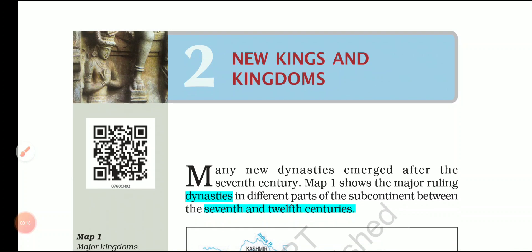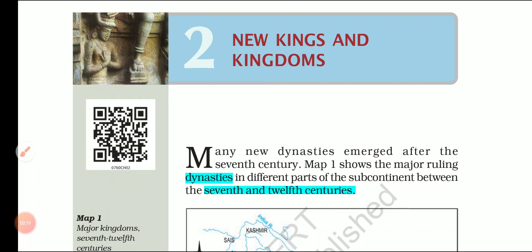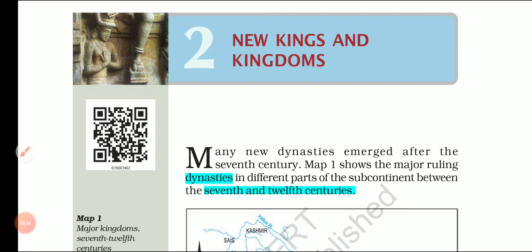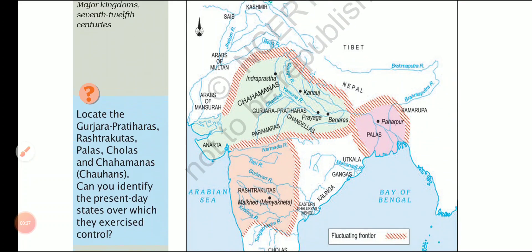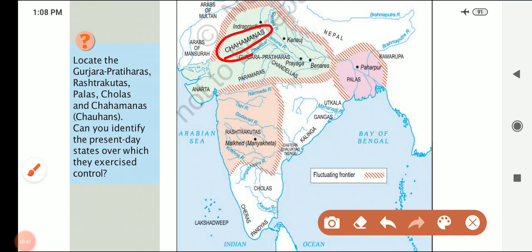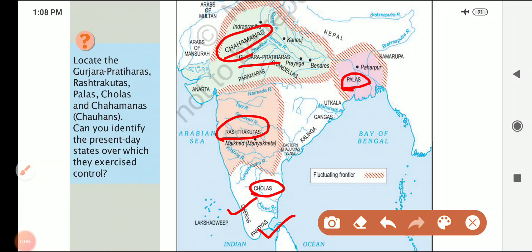As the name suggests, this chapter discusses the major ruling dynasties that emerged between the 7th and 12th centuries in different parts of the subcontinent. The important ones being Chahamanas or Chauhans and Gurjara-Pratiharas, Palas in the east, Rashtrakutas in the Deccan, then Cholas in the south, along with Chera and Pandya, and Chandela.